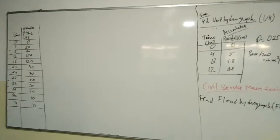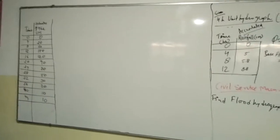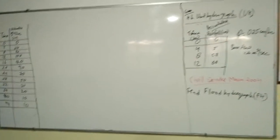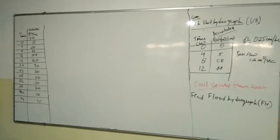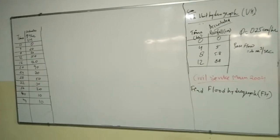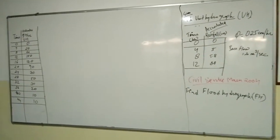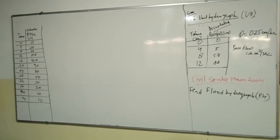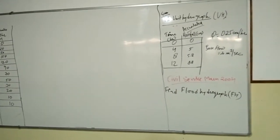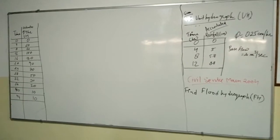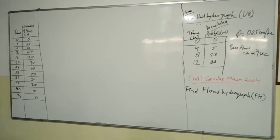The accumulated rainfall data is given as follows: rainfall for the first 4 hours is 5 cm, for the second 4 hours it is 5.8 cm, and for the last 4 hours it is 8.8 cm. The phi index for the given problem is 0.25 cm per hour and the base flow given is 20 cubic meters per second.